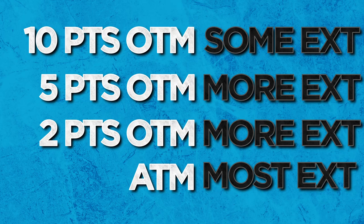If the option is at the money, it would have the most extrinsic value — more than 2 points out of the money, more than 5 points, more than 10. And of course, this works in reverse too: starting at the money and moving out of the money, you'll see lower and lower extrinsic values. The proximity effect gets stronger the closer an out-of-the-money option moves toward being at the money, and weaker the further out of the money it goes.